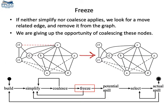When we cannot neither simplify nor coalesce nodes, we select some dashed edges and remove them. This effectively means giving up coalescing. This stage is called freezing.